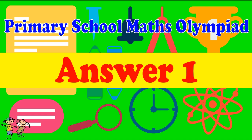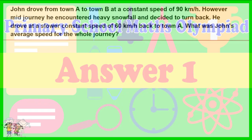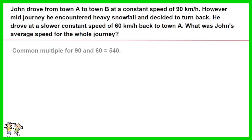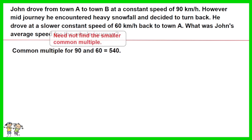Answer for question 1. Let's find the common multiple for the two speeds John was traveling, which is 90 km per hour and 60 km per hour. The obvious one is 540. Please note that you do not need to find the smallest common multiple for the two numbers. Choose the obvious one that is easy to use later.